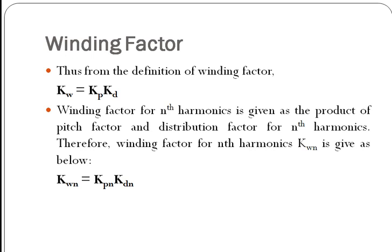From the definition of winding factor, if we calculate the ratio of EMF generated in a short pitch distributed winding to EMF generated in a concentrated winding, the value of Kw comes out to be Kp multiplied by Kd. So from this formula we can define winding factor as the product of pitch factor and distribution factor. Winding factor for the nth harmonic can also be calculated by computing the pitch factor and distribution factor for the nth harmonic, giving Kw = Kpn multiplied by Kdn.